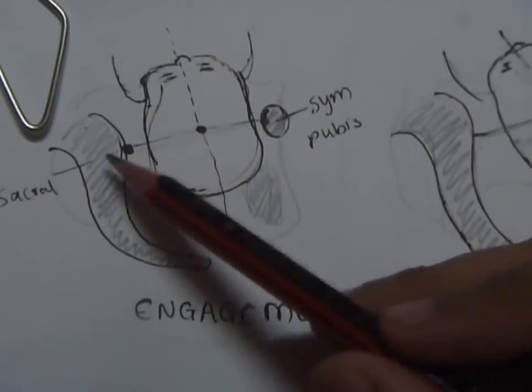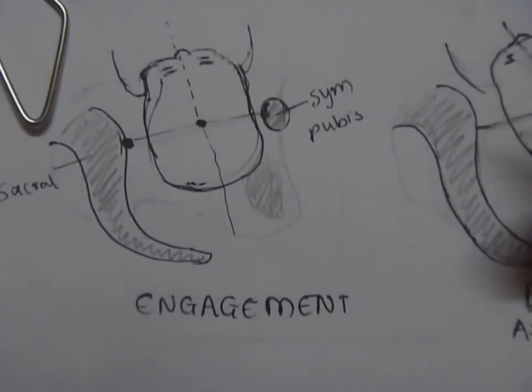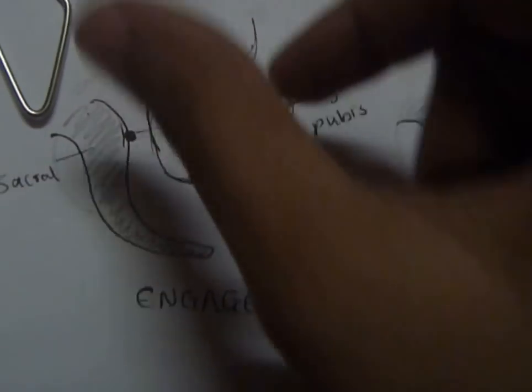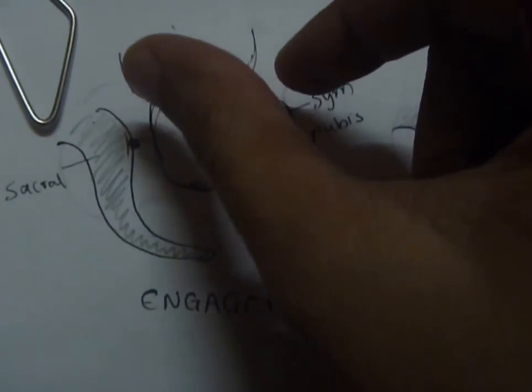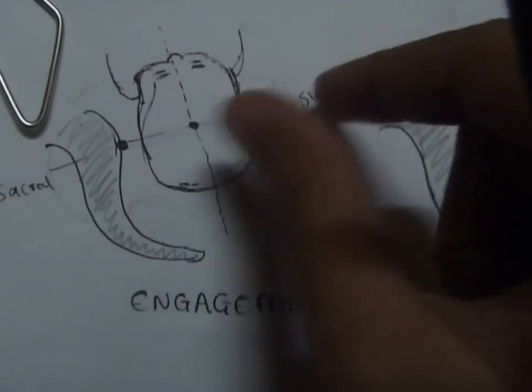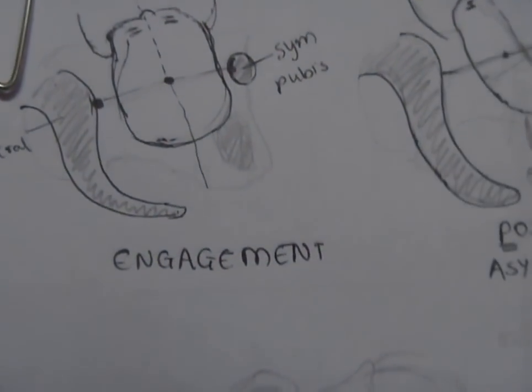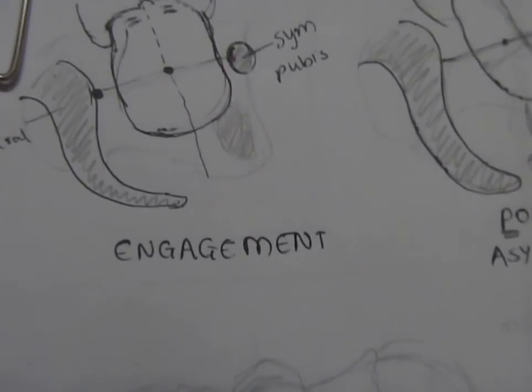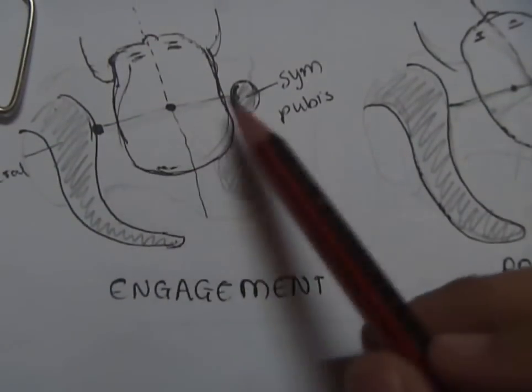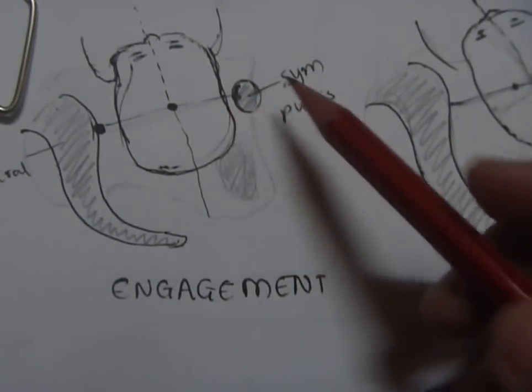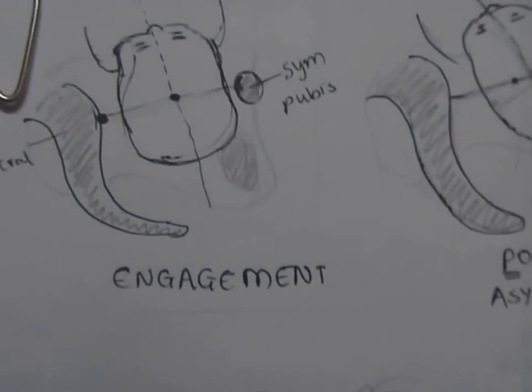Now if the baby has not engaged, then what has happened is either the head is floating or it is dipping, that is not engaged but almost engaged. Now synclitism is when the biparietal diameter of the fetal head is parallel to the planes of the pelvis.